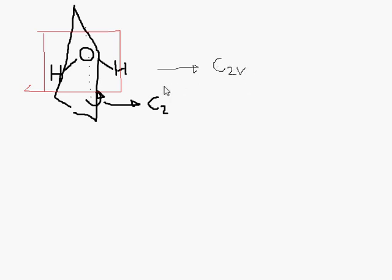And this molecule happens to be in the C2V point group. And that is because it only has one rotation axis, which is the C2 axis. And it only has one set of mirror planes, which are not perpendicular to the main rotation axis.